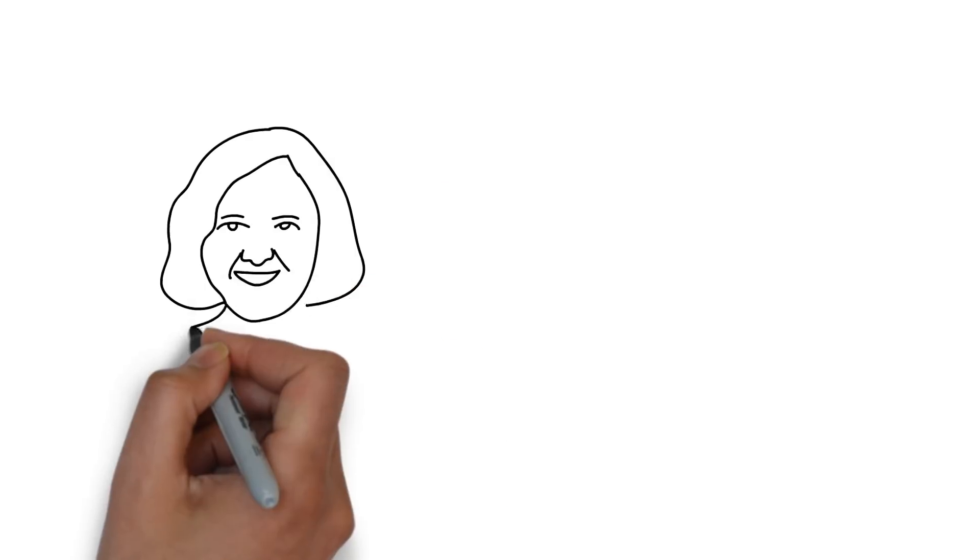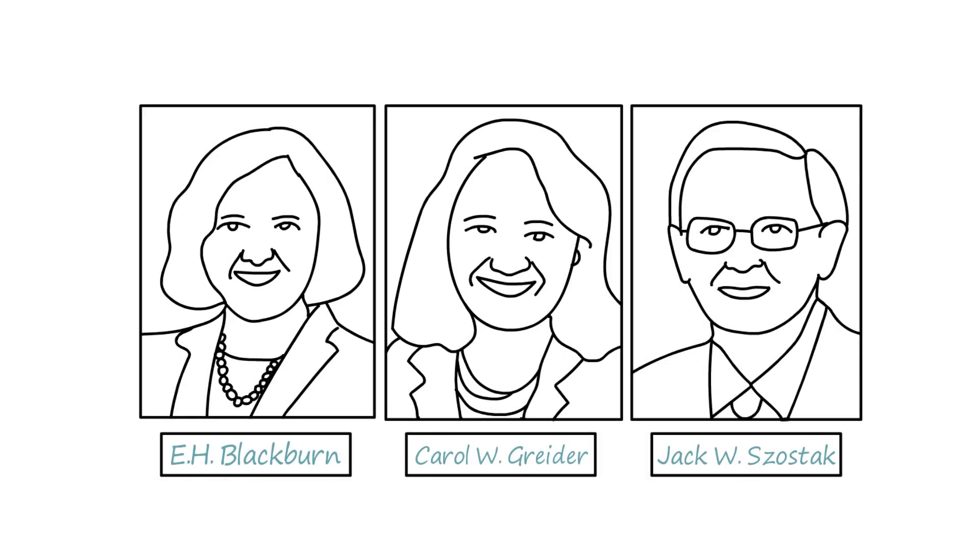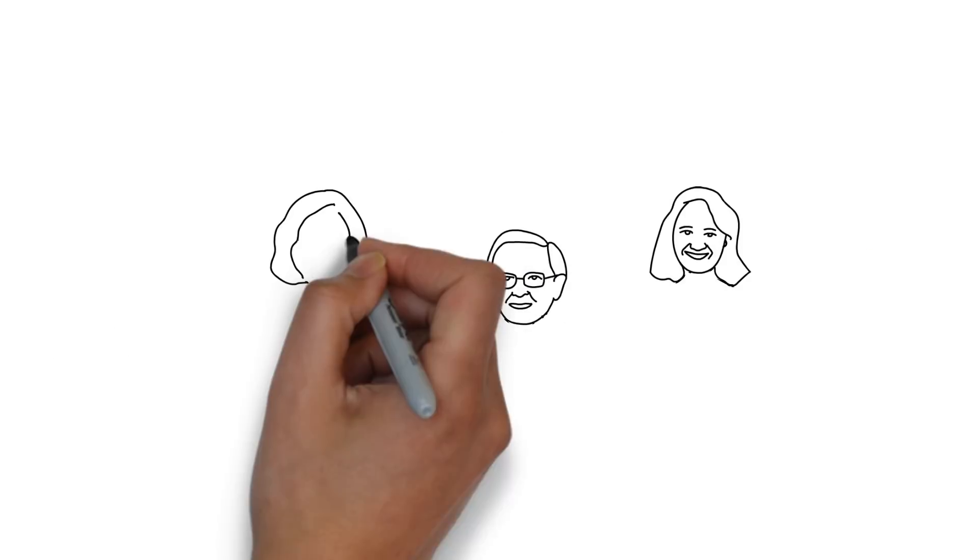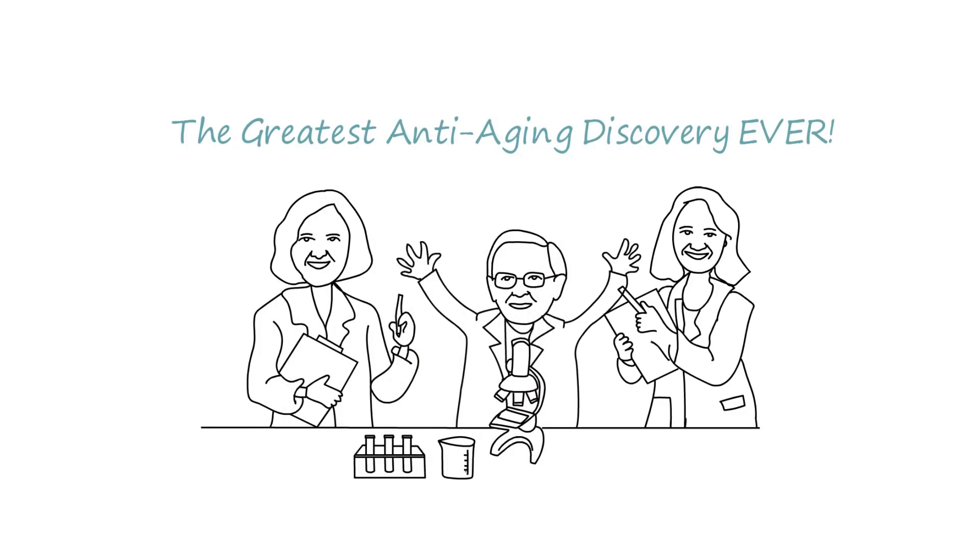In 2009, the Nobel Prize for Medicine was given to three physiologists for their discovery of the enzyme telomerase, which prevents the breakdown of telomeres. This is considered the greatest anti-aging discovery ever.